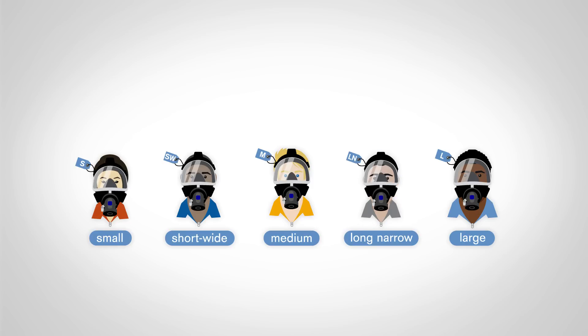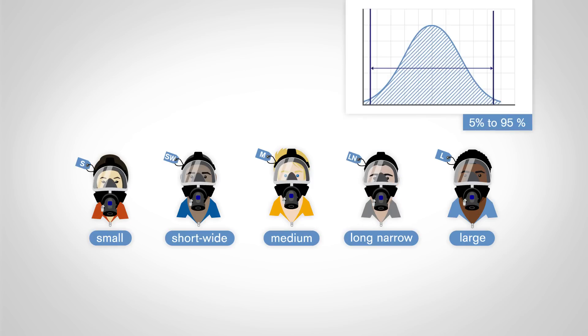Five head shapes were determined that are common to five to 95% of the world's population. With these five different head shapes, Dräger tests its masks.